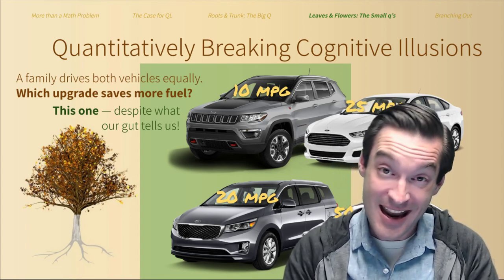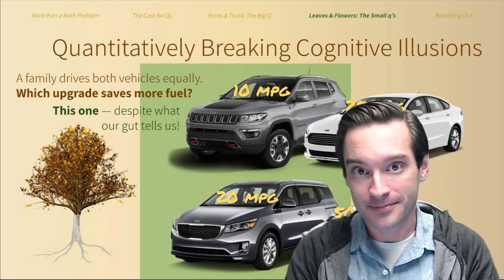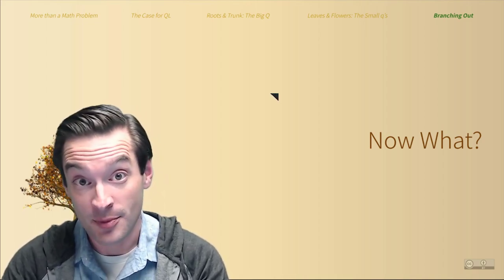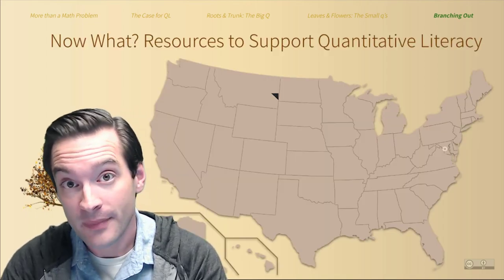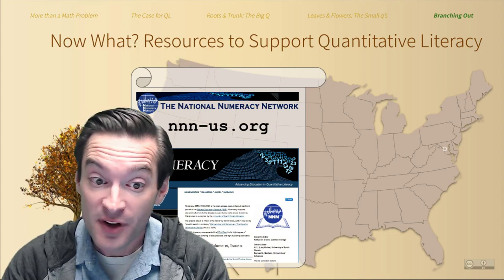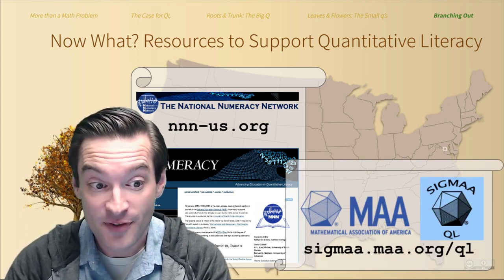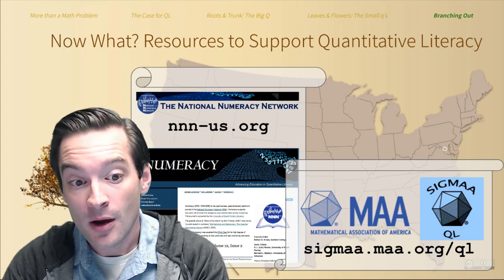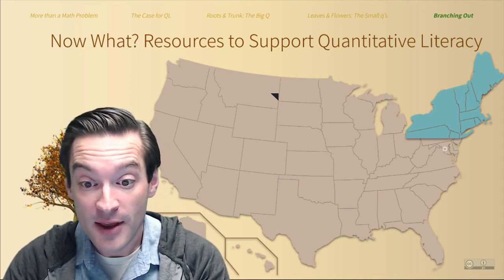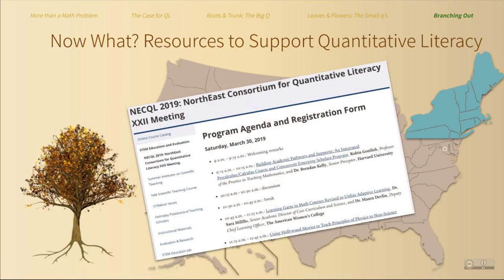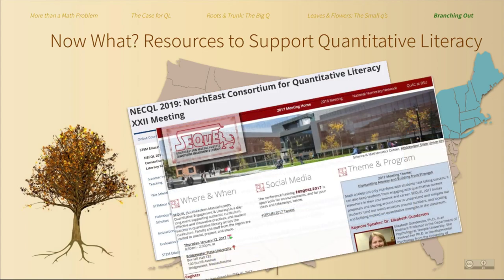As the need for more quantitative literacy has blossomed, so too has the organizational infrastructure to support it. On a national level, the National Numeracy Network draws together faculty and administrators across all disciplines working on quantitative literacy, hosting an annual conference in the fall and compiling essential resources through their website and the open access journal Numeracy. The Mathematical Association of America likewise supports math and statistics faculty with its quantitative literacy special interest group. Regional networks and conferences have also arisen, including the annual conferences of the Northeast Consortium for Quantitative Literacy, NECQL, as well as the Southeastern Massachusetts Quantitative Engagement and Literacy Meeting, or SEQIL.